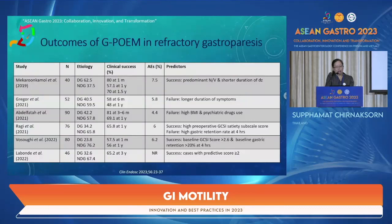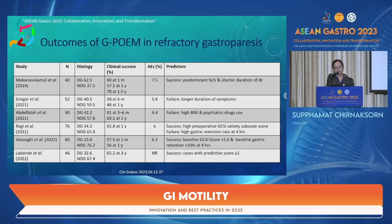The outcome of G-POEM in refractory gastroparesis shows clinical success of approximately 60 to 70% at one year, with side effects around 5%. However, we do not have randomized trials comparing G-POEM to other modalities such as gastric electrical stimulation or surgical pyloroplasty. Limited data show G-POEM is better than gastric electrical stimulation and equally effective as surgical pylorotomy.